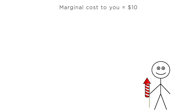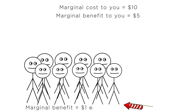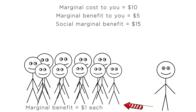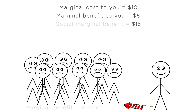Suppose you're producing a public good — you're putting on a firework show in your neighborhood for Independence Day. The marginal cost to you of firing off one more firework is the $10 that next firework will cost you. And let's say the marginal benefit to you of firing off that firework is $5. It'd be fun to shoot the next firework, but it's not worth the $10 marginal cost, so you don't shoot off another firework. But suppose you have 10 neighbors watching the show, and each of them values that next firework at $1. In total, the next firework would bring benefits of $15 to you and your 10 neighbors. The social marginal benefit is $15, and the marginal cost is only $10. So from society's standpoint, you should buy the extra firework — the benefit of everyone seeing the firework is greater than the cost.